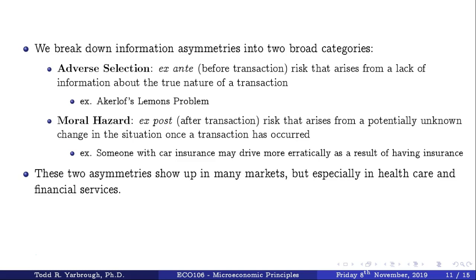These information asymmetries show up in many markets, especially health care and financial services. For adverse selection in health care, the individuals who most need health insurance are often the least able to purchase it. The people who most need it are sick, and sick people are the least likely to maintain payment of their premiums because their premiums keep going up. This is historically why in private health care systems, low-health and typically low-income individuals have a very difficult time receiving health care through health insurance.